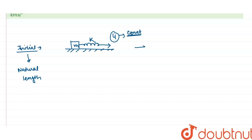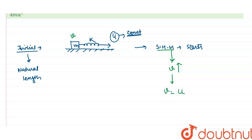When the spring starts to pull the block, simple harmonic motion begins. The velocity of the block v is increasing. Extension takes place as the block is pulled, and there comes a time when the velocity of the block equals the velocity of the spring.